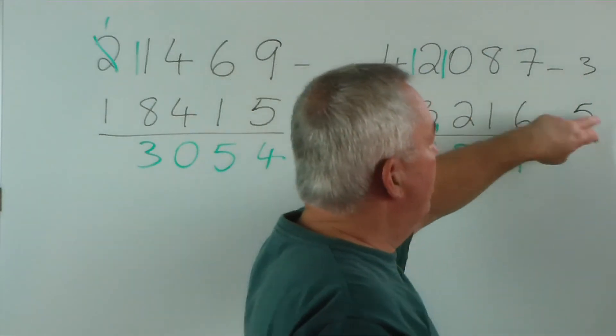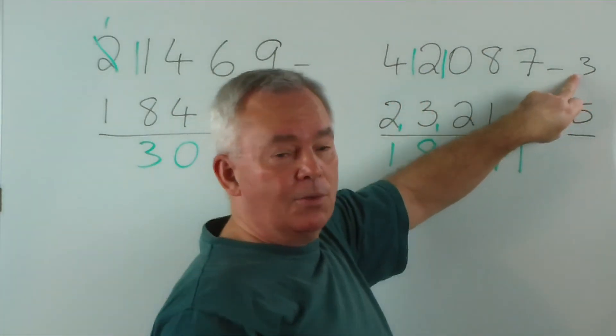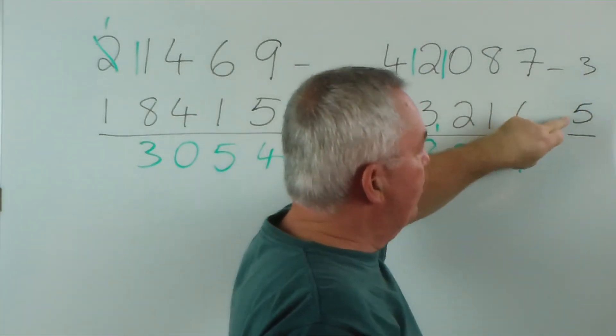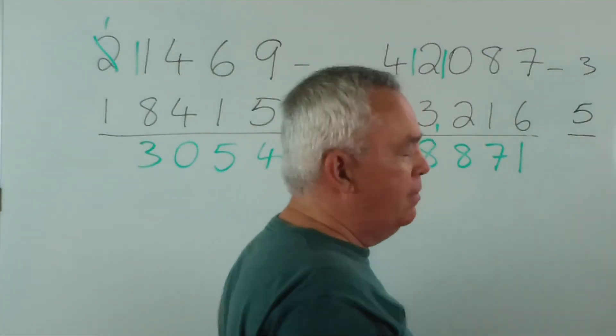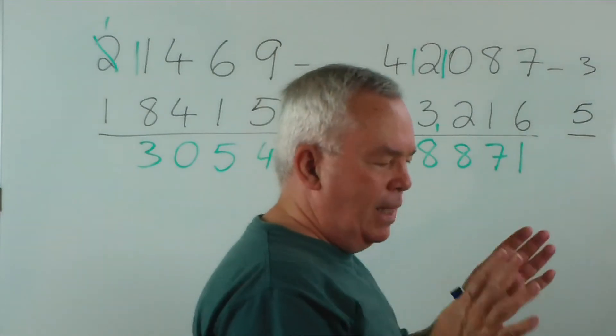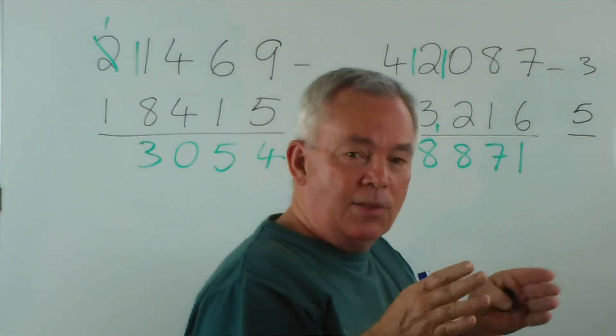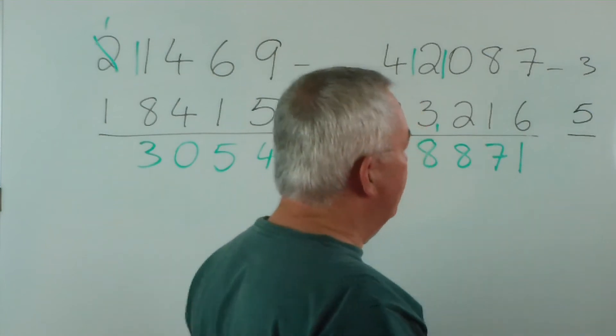Now, in some ways, I should have left that as a 12, because 3 minus 5 is negative 2, and negative 2 base 9, that is if we're working in bunches of 9, is equal to a 7, 9 minus 2.